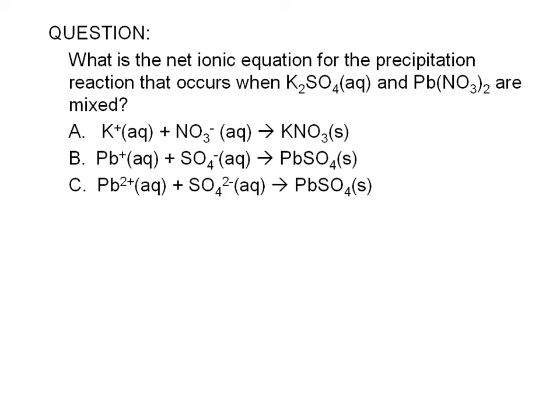A precipitate is a compound that is insoluble in water. Therefore, to answer this question, we just need to look for a pair of ions that will form a compound that is insoluble in water. We use solubility rules to predict whether a compound is soluble or insoluble in water.